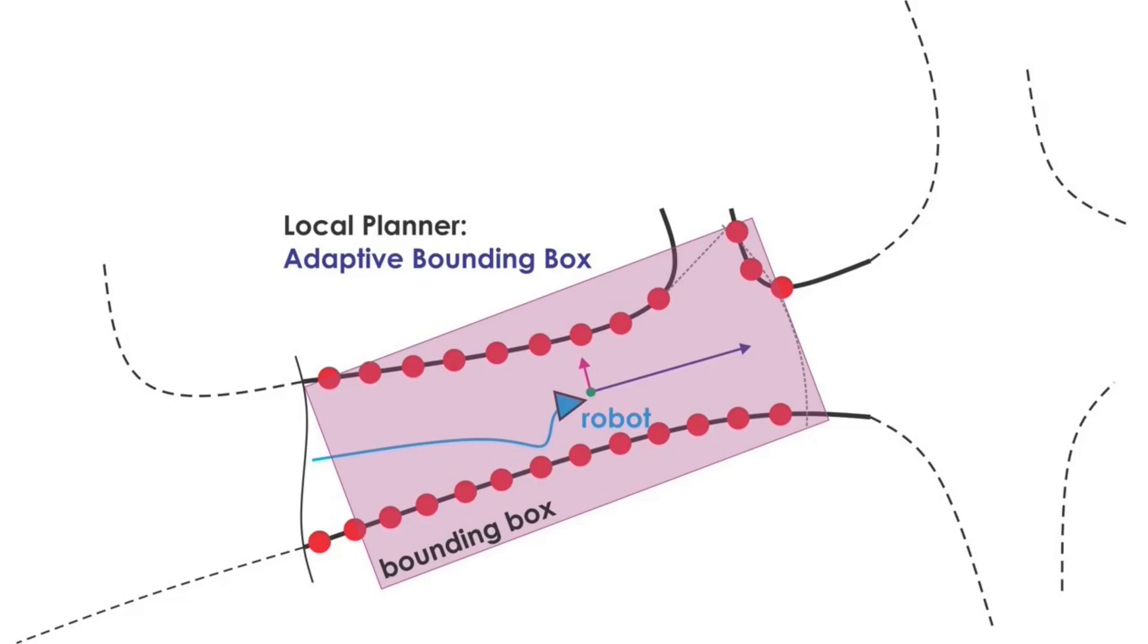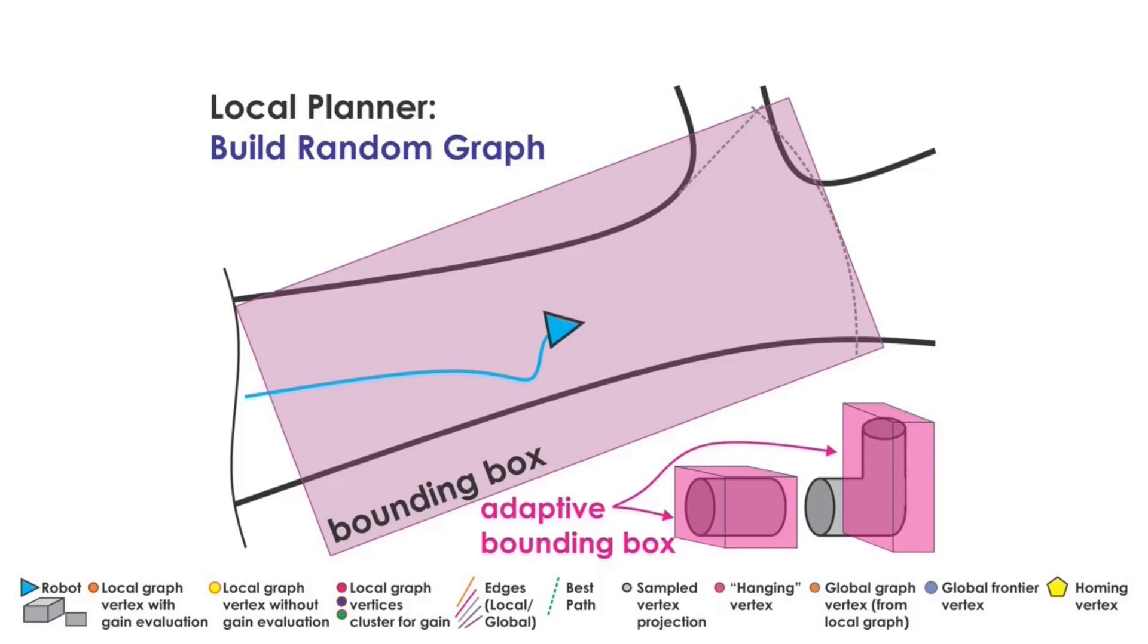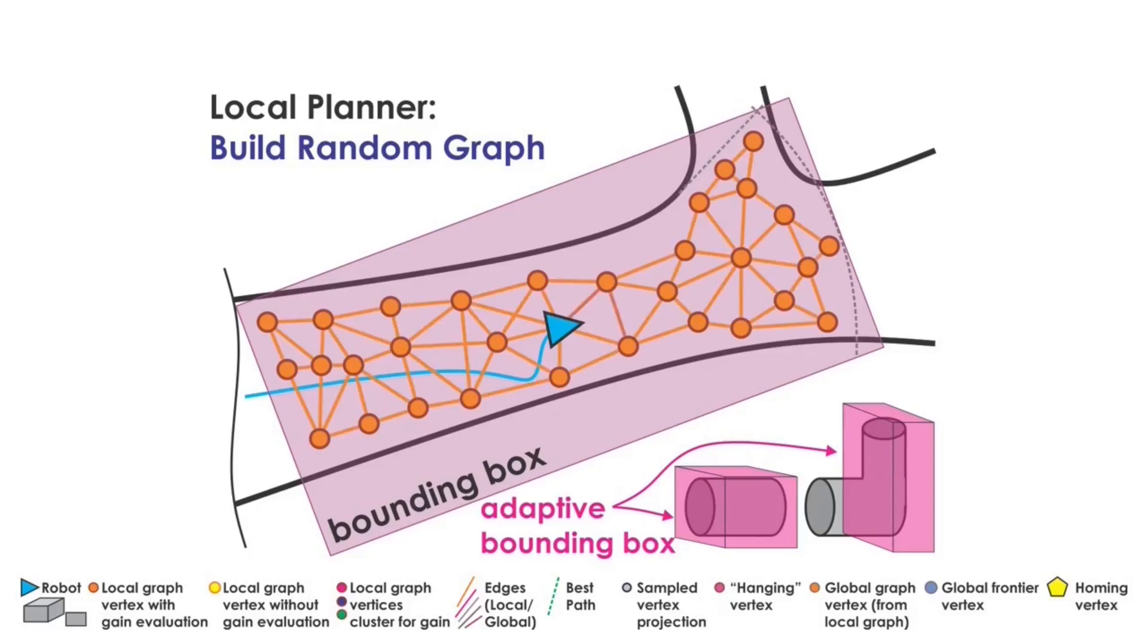Its orientation is set to be along the principal components. Using this method, the planner can handle diverse geometries within complex and large-scale environments. Once the bounding box is derived, the planner then samples points in the free space inside the local bounding box. These points are connected by collision-free edges to form an undirected 3D graph.